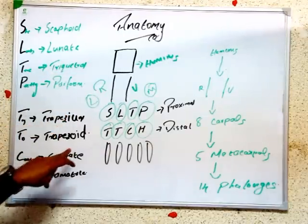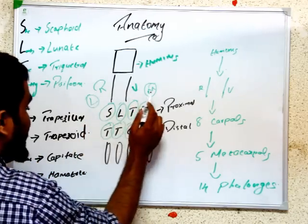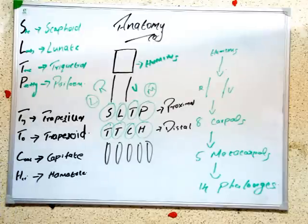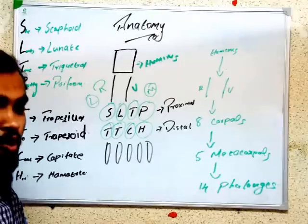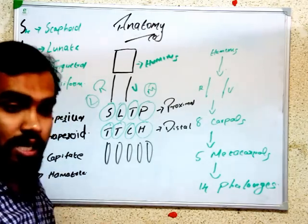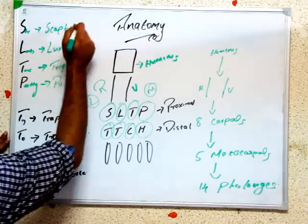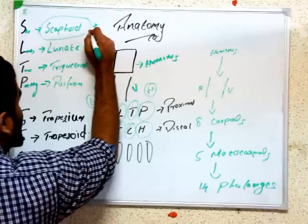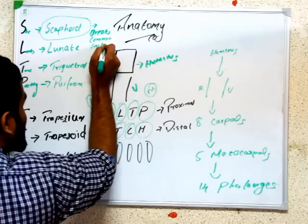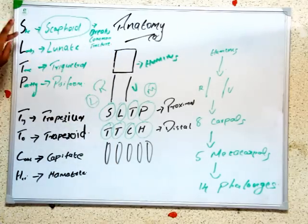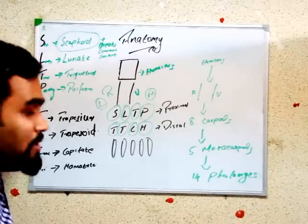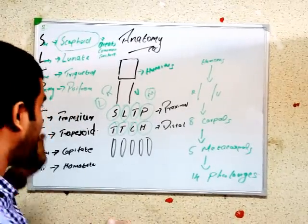The carpal bones from lateral to medial are: Scaphoid, Lunate, Triquetral, Pisiform, Trapezium, Trapezoid, Capitate, Hamate. On the radial side we have the scaphoid bone. The most commonly asked question: which carpal bone is most commonly fractured? That is the scaphoid. Remember: 'She loves to break up' — she is for scaphoid, so scaphoid commonly breaks.